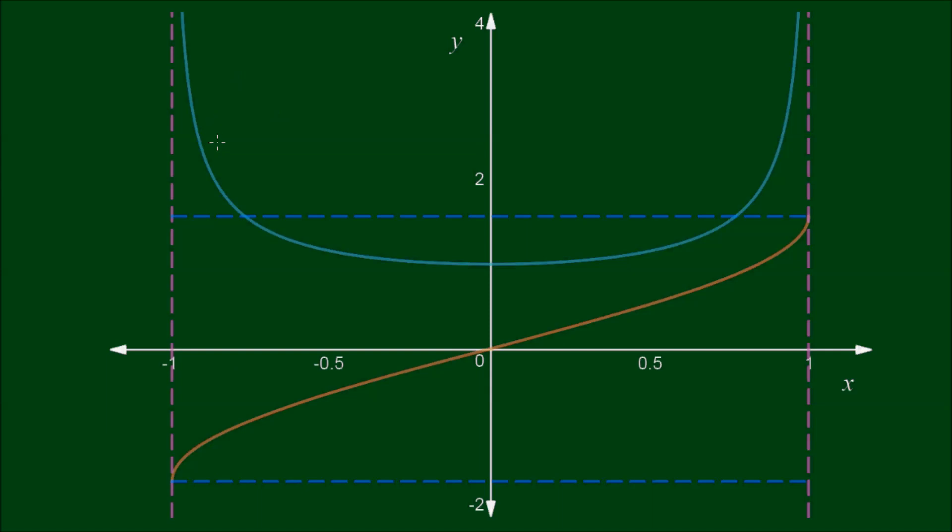Okay, so on this chart here, this turquoise curve here is f of x equals 1 on square root of 1 minus x squared, and this orange curve here is its primitive, big F of x, which equals arc sine x. All right, so the domain of the primitive function is between negative 1 and 1, and the range is between pi on 2 and negative pi on 2, and that is inclusive.